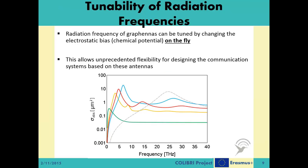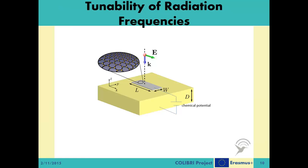The radiation frequency of graphennas can be tuned by changing the electrostatic bias, or the chemical potential, on the fly — meaning you can change this frequency while the antenna is in operation. This allows unprecedented flexibility for designing communication systems based on these antennas. Here you can see the chemical potential of a given graphene patch.